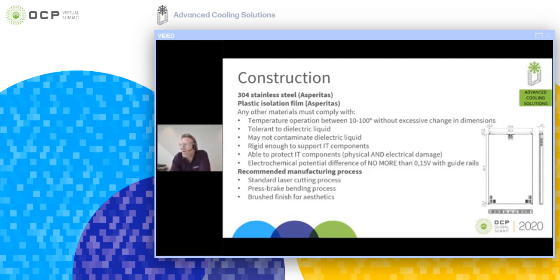The chassis should also take into account any potential electrochemical potential difference, which should never exceed 0.15 volts. If this system is to be immersed in a tank with an aluminium frame, using stainless steel as the base material could create a potential difference which is too high and may incur corrosion, especially in areas above the dielectric liquid. It's recommended to maintain material consistency between the tank and the materials used inside the chassis.